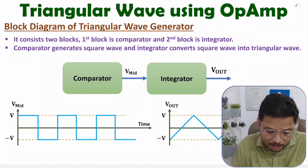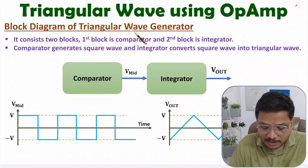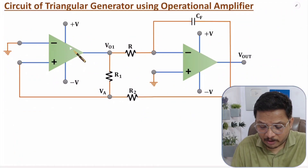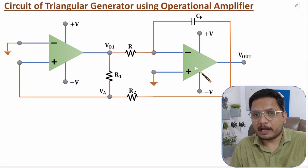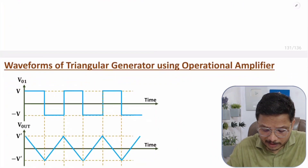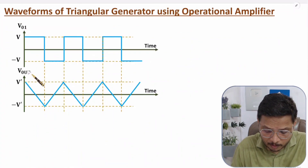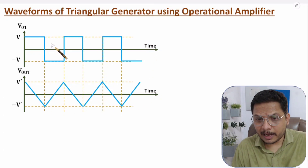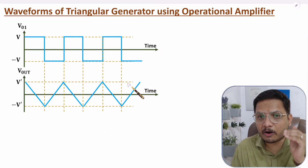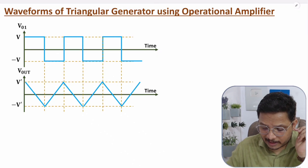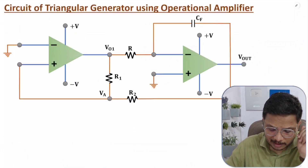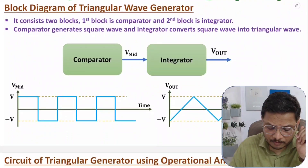First I'll be explaining the block diagram of the triangular wave generator. Based on the block diagram, I'll make the circuit using operational amplifier. Based on the circuit, I'll explain the working, and then the waveforms. Finally, I'll derive the frequency equation of the triangular wave generator.